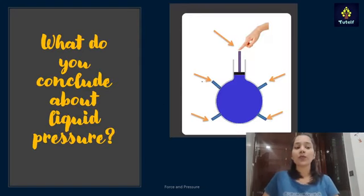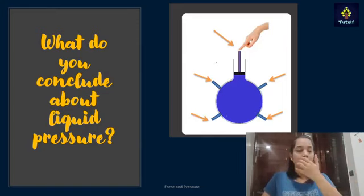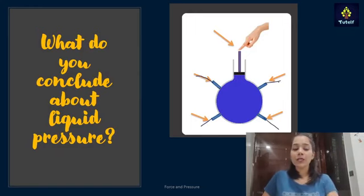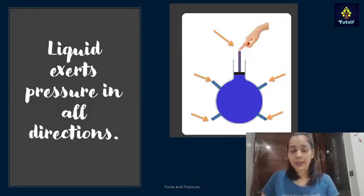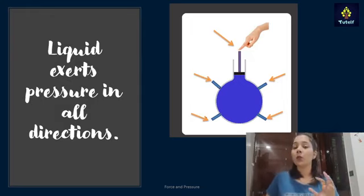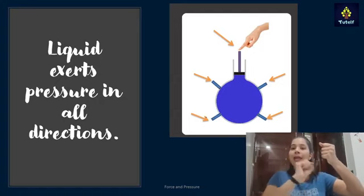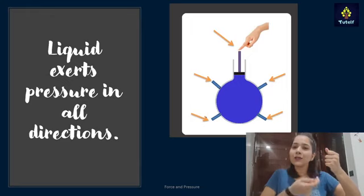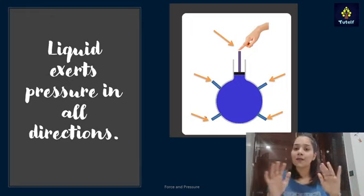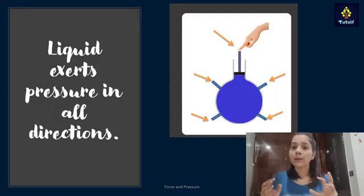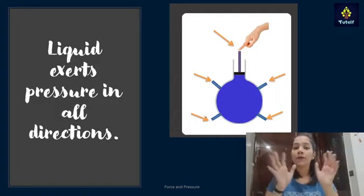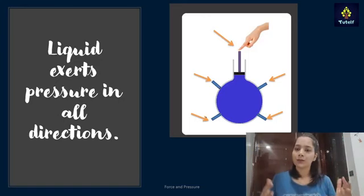This is a flask with four openings. A person exerts a force from the top, and water comes out from all openings — confirming that liquid exerts pressure in all directions. For a hands-on activity, take a balloon, fill it with water, and punch a few holes in it. Water will come out from each and every hole, showing that water exerts force in all directions.